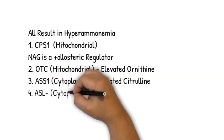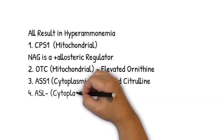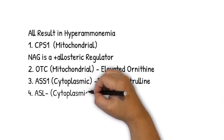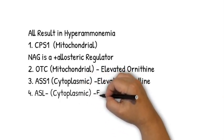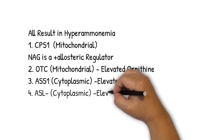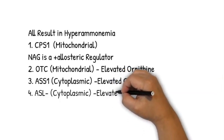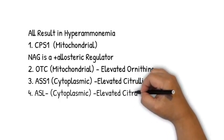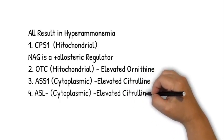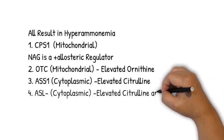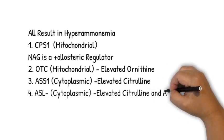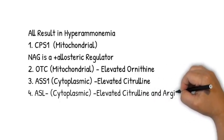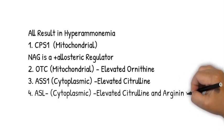Number four: the deficiency of argininosuccinate lyase, ASL, which is a cytoplasmic enzyme. Here you are likely to see an elevation in both citrulline as well as an elevation in argininosuccinate.